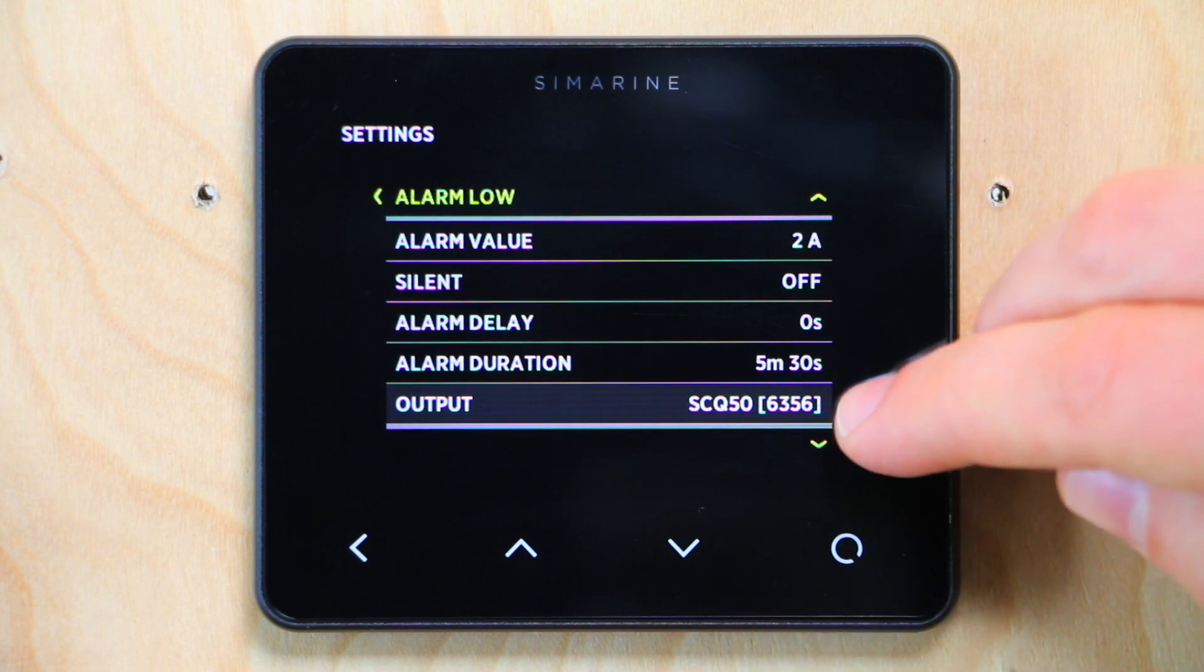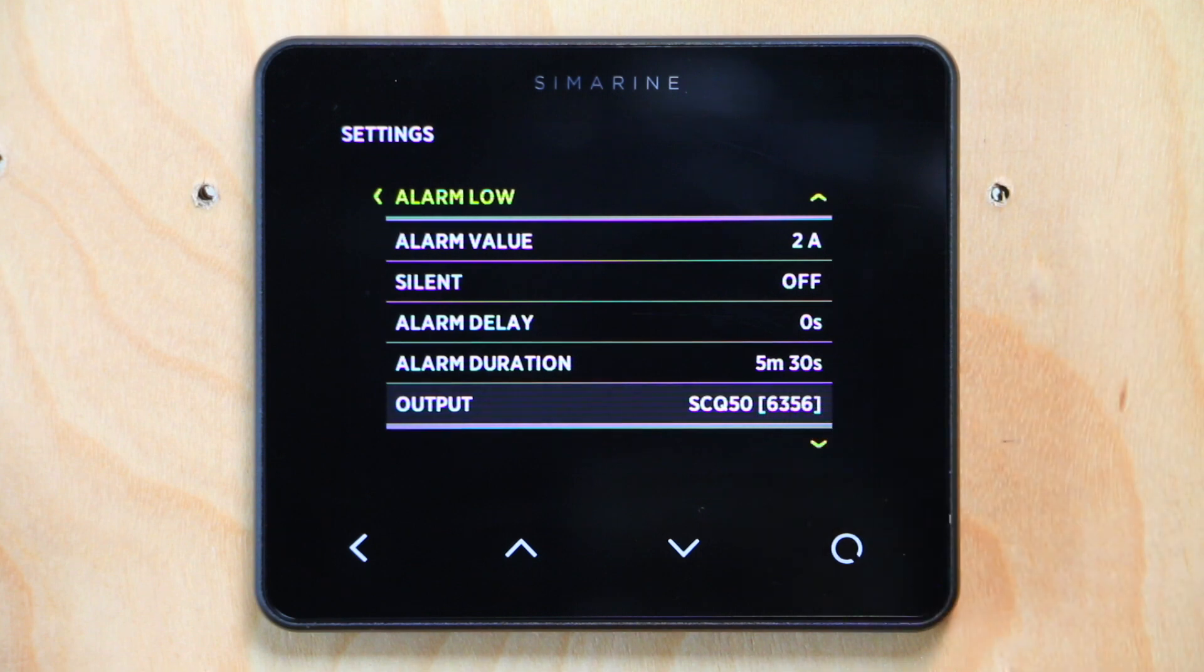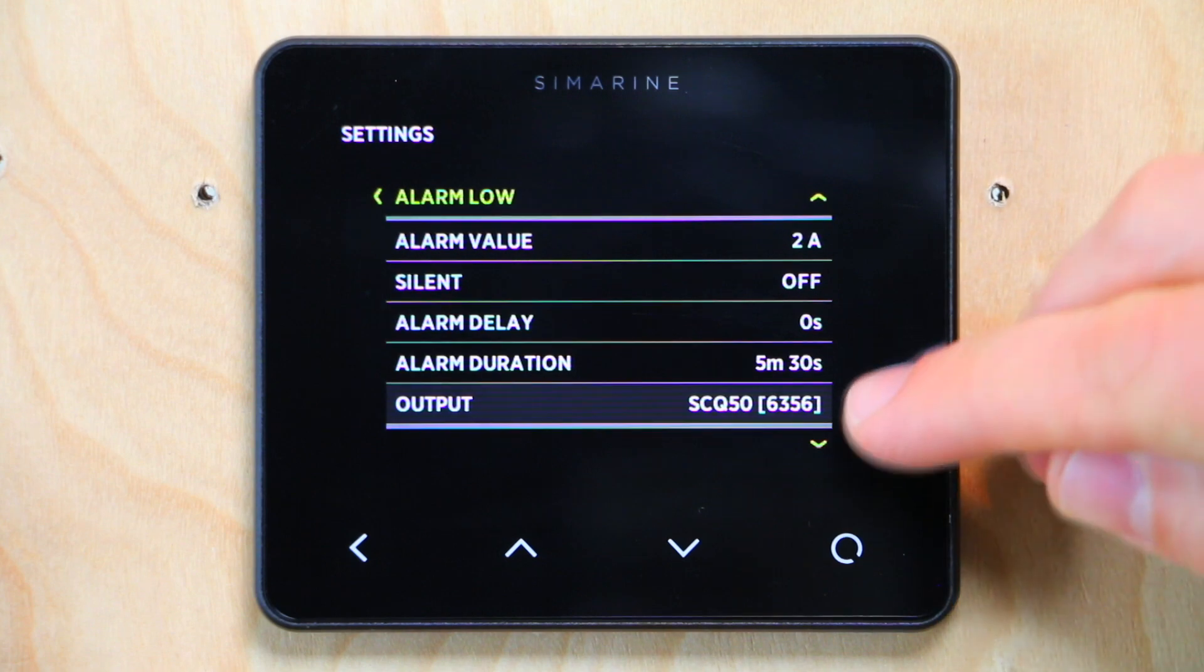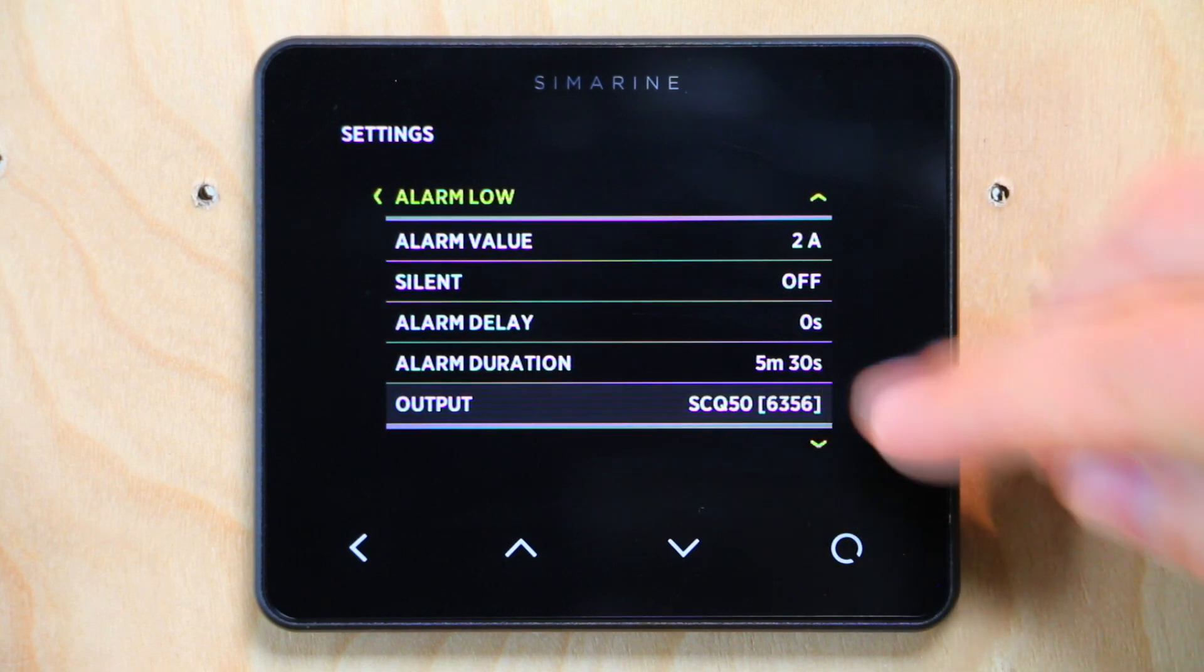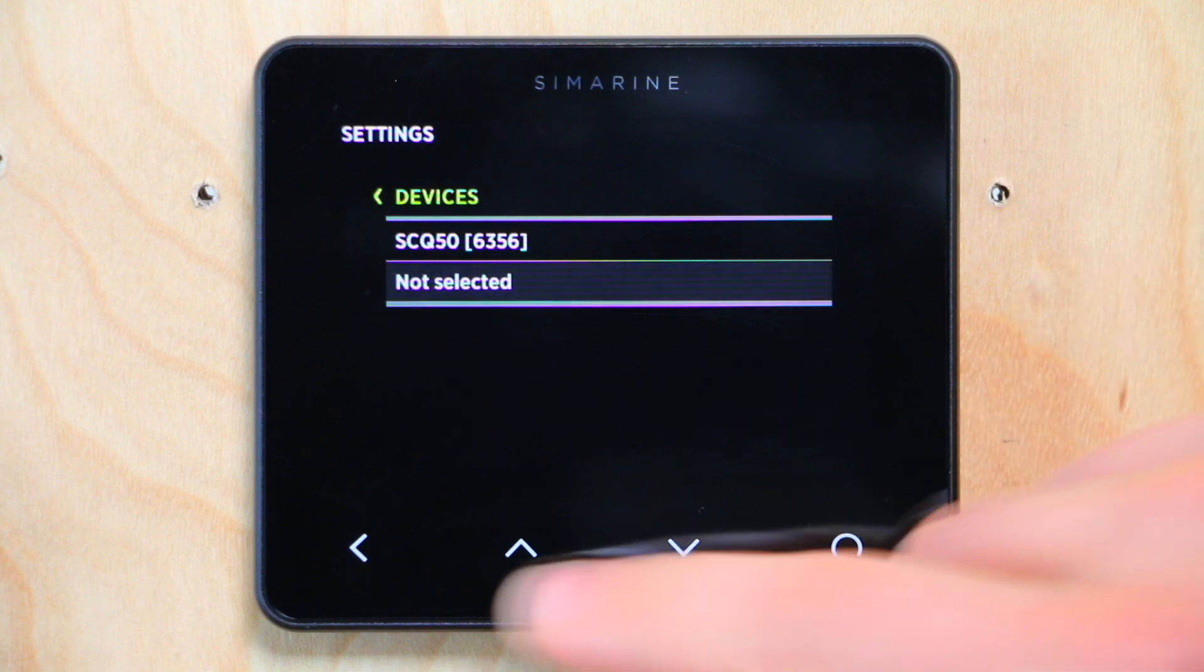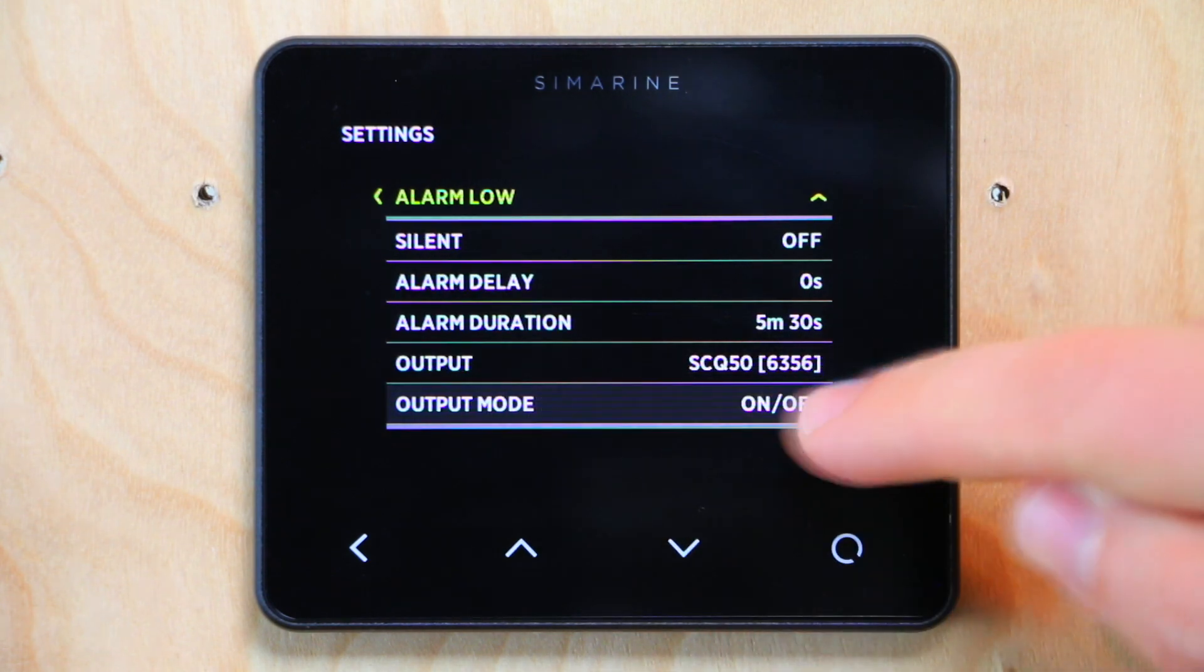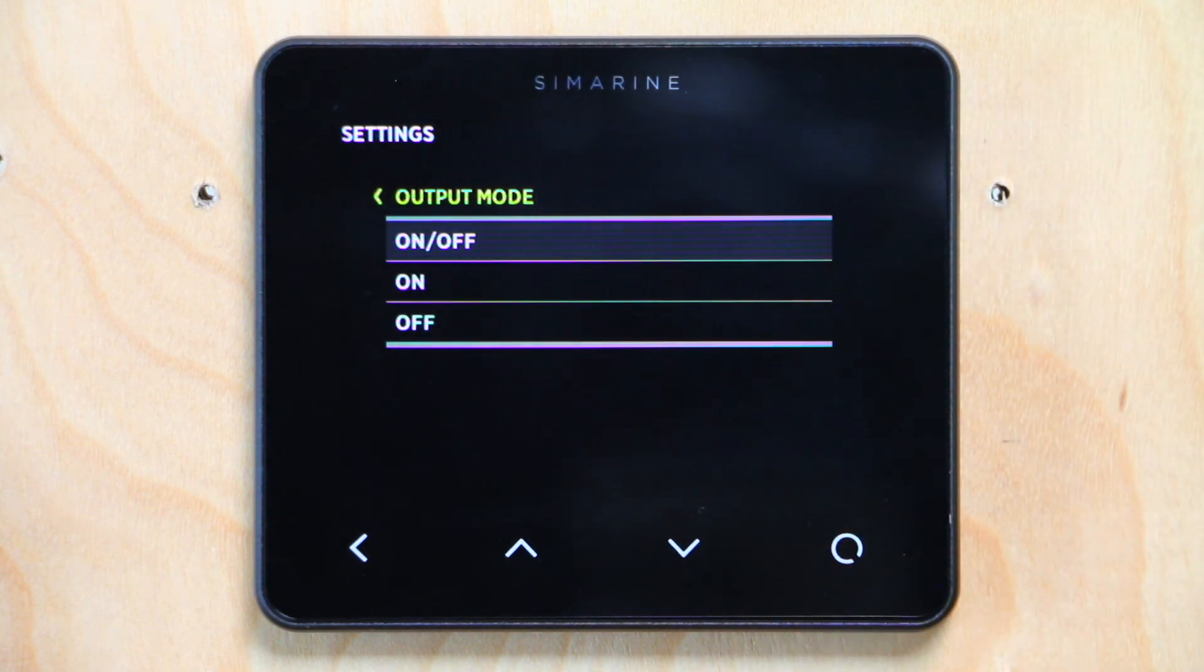The output, this is the output relay on the Quadroshunt. SCQ50 is the Quadroshunt model number. 6356 is part of the serial number for that particular Quadroshunt. That way if you have multiple Quadroshunts, you can grab the serial number and know which one you're selecting. If we had one of the other modules from Seamarine, we would select that module. The Quadroshunt is the only one with a little alarm relay on it, but if we had multiple modules plugged in that had relays, all those relays would show up in this list. We've selected the one that's available in this system. And the output mode is on-off.